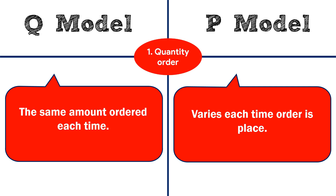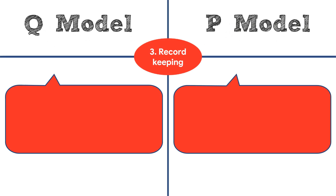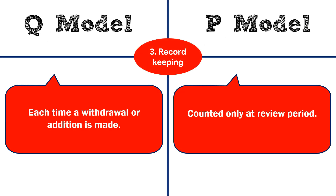Now the differences between Q model and P model. First, quantity ordered: in the Q model the same amount is ordered each time, whereas in the P model the amount of order varies each time. Second, when to place an order: in the Q model an order is placed when inventory position drops to the reorder level, whereas in the P model an order is placed when the review period arrives.